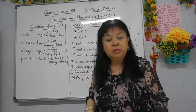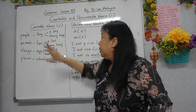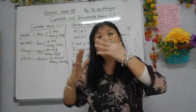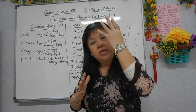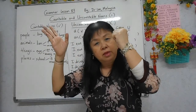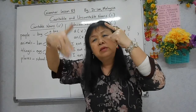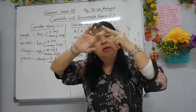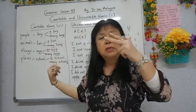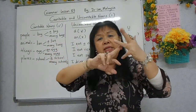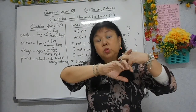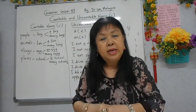Baiklah. Countable nouns. Perkataan nouns ini boleh dibahagikan kepada empat kategori: manusia — boy, girl, teacher, student; animals binatang — lions, tigers, cats, dogs; benda — kerusi, meja, table, chest, marker, pen, ruler; dan tempat — kolam, pond, hospital, school, classroom, dan sebagainya. Dan.